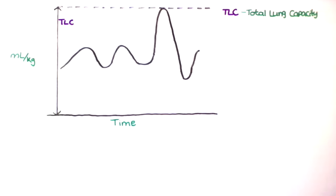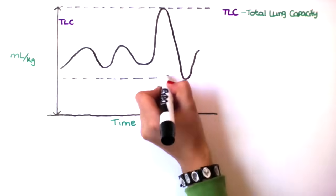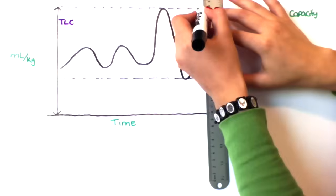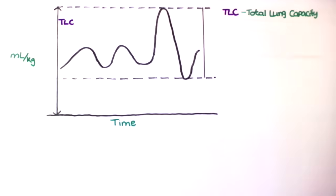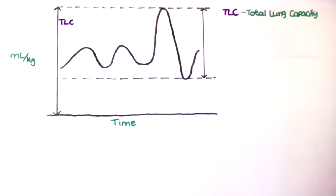Normally it's 6 liters for adult males and 4.2 liters for adult females. Next we're going to look at vital capacity, or VC. Vital capacity is the amount of gas that can be exhaled after a maximal inspiration.